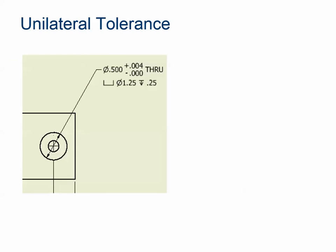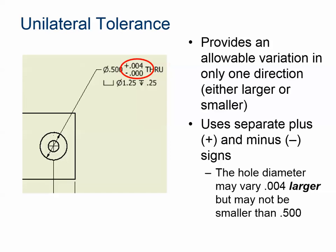A unilateral tolerance means that you are allowed to hit that target number, but if it's a little bit bigger or a little bit smaller in one direction then it's okay. So here it is perfectly acceptable for the hole to be 0.504 in diameter, but it cannot be smaller than 0.500 because that would probably cause an interference. Unilateral tolerance is basically specifying that — there it is on the drawing.